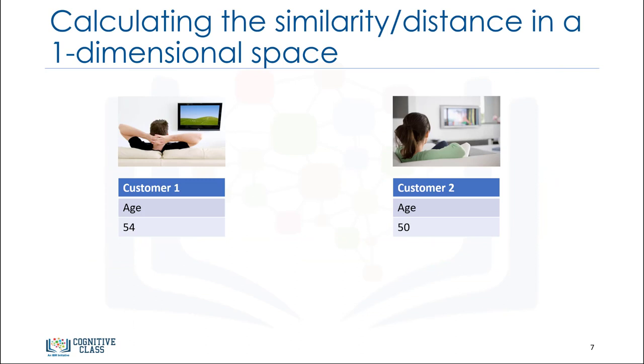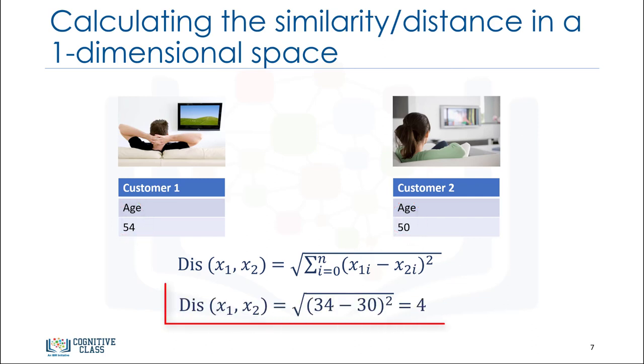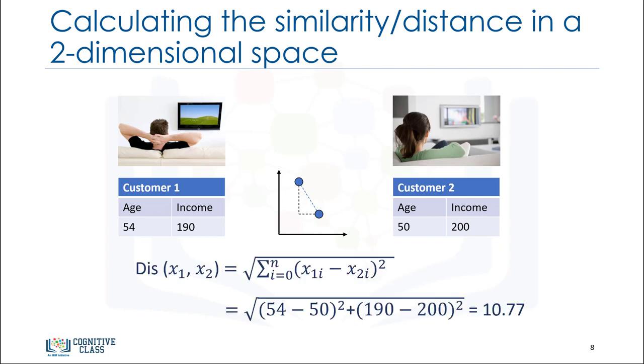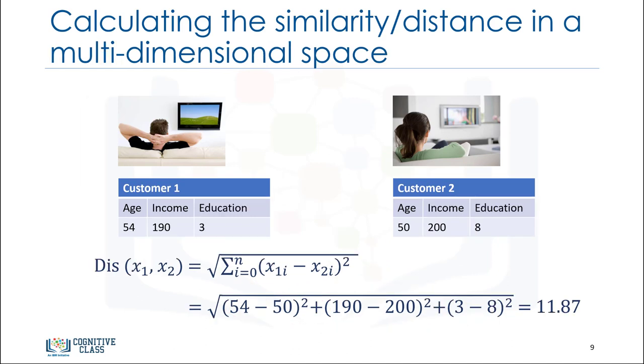Assume that we have two customers, customer 1 and customer 2. And for a moment, assume that these two customers have only one feature, age. We can easily use a specific type of Minkowski distance to calculate the distance of these two customers. It is indeed the Euclidean distance. Distance of x1 from x2 is root of 34 minus 30 to power of 2, which is 4. What about if we have more than one feature, for example age and income? If we have income and age for each customer, we can still use the same formula, but this time we're using it in a two-dimensional space. We can also use the same distance matrix for multi-dimensional vectors. Of course, we have to normalize our feature set to get the accurate dissimilarity measure.